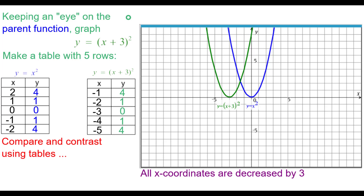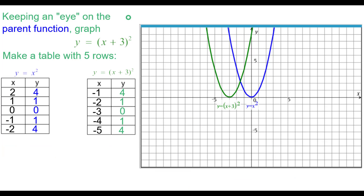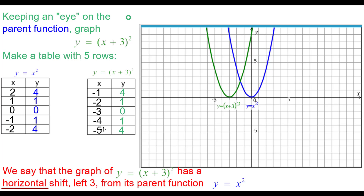All x coordinates are decreased by 3, while the y coordinates stay the same. You can see that in the graph — in the equation, it's a plus 3. When it's inside the function, it reverses from what you think it would be. What we say is that the graph of y equals the quantity of x plus 3, squared, has a horizontal shift left 3 from its parent function y equals x squared.